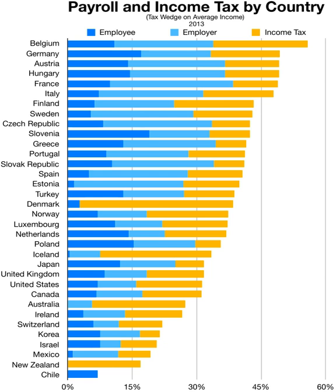Individuals are often taxed at different rates than corporations. Individuals include only human beings. Tax systems in countries other than the USA treat an entity as a corporation only if it is legally organized as a corporation. Estates and trusts are usually subject to special tax provisions. Other taxable entities are generally treated as partnerships. In the U.S., many kinds of entities may elect to be treated as a corporation or a partnership. Partners of partnerships are treated as having income, deductions, and credits equal to their shares of such partnership items.